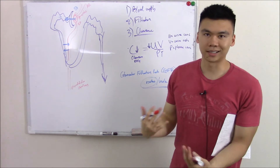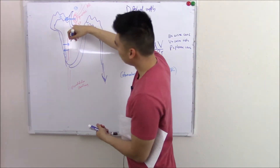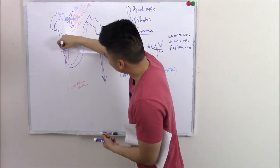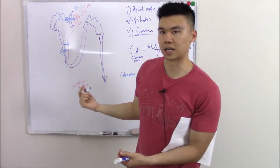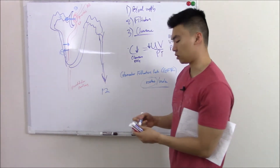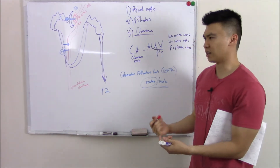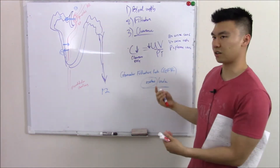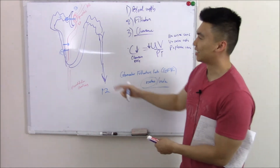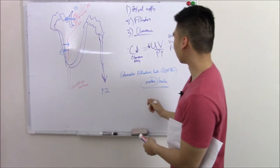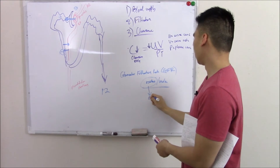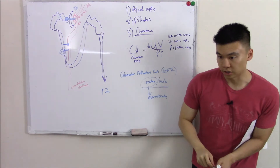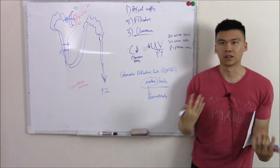In actuality, creatinine does get some extra secretion from your peritubular capillaries — let's say two extra units — so when you measure urine you get 12 units a minute instead of the actual 10. So creatinine overestimates GFR. But it's our best tool and the one we usually use in labs. Creatinine and GFR go together in labs as a measure of kidney function and kidney health.